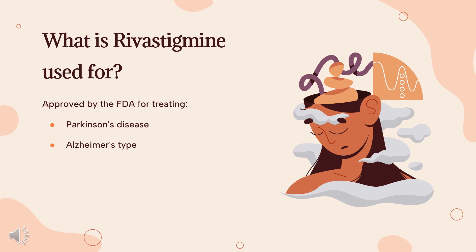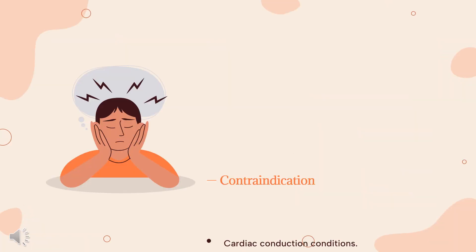What is rivastigmine used for? For the treatment of mild to moderate dementia associated with Parkinson's disease or of the Alzheimer's type.